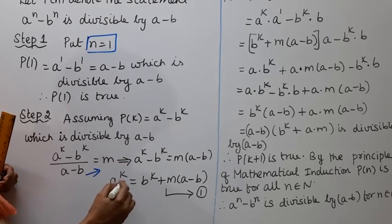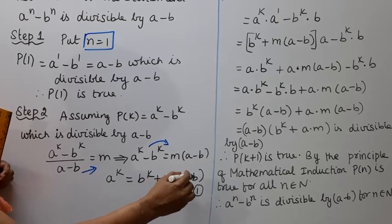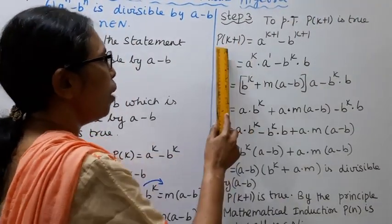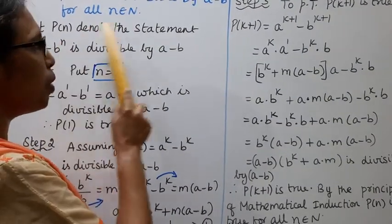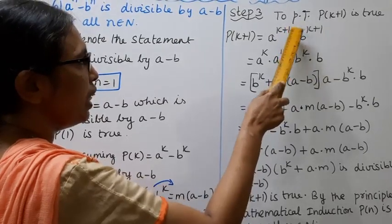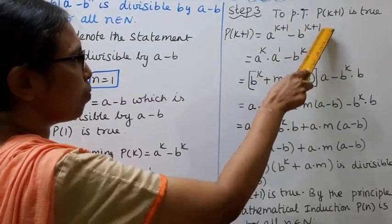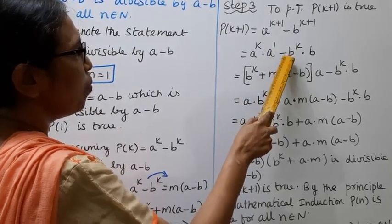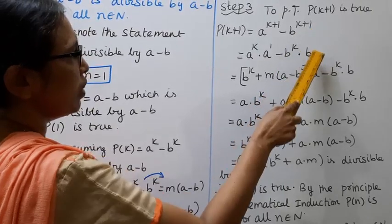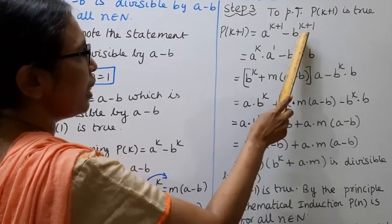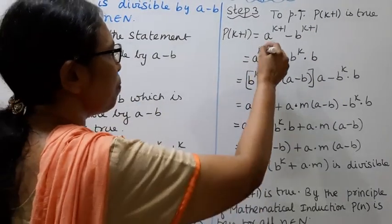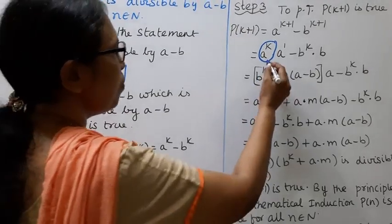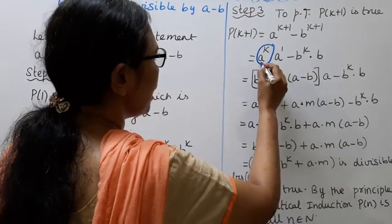From Step 2, a power k equals b power k plus m into a minus b. Step 3: To prove that P of k plus 1 is true. P of k plus 1 means a power k plus 1 minus b power k plus 1. We write a power k plus 1 as a power k into a power 1, and b power k plus 1 as b power k into b power 1.